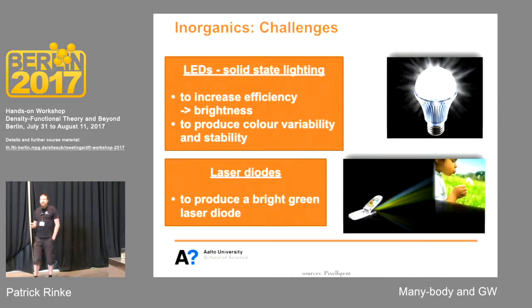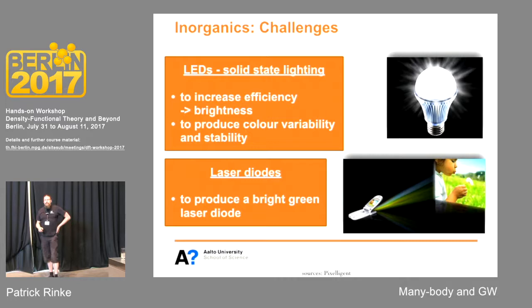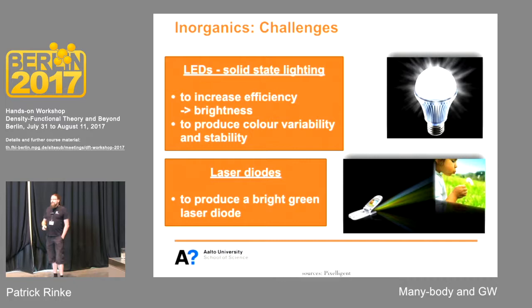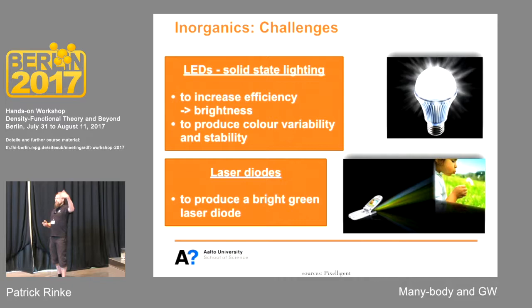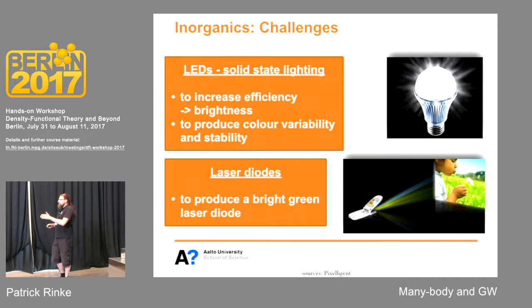Why are these systems still interesting? In solid-state lighting, although we now have these LEDs, there are still fundamental mechanisms that impede the conversion efficiency of electricity into light. There are issues with color variability, color stability, and color mixing. There's still a big problem with laser diodes. The vision is to have a laser diode powerful enough to project from your cell phone. This would work with color mixing — red, green, and blue — but red and blue are available while green is not. This is a material science problem.